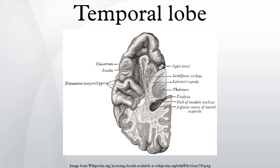Visual: The areas associated with vision in the temporal lobe interpret the meaning of visual stimuli and establish object recognition. The ventral part of the temporal cortices appear to be involved in high-level visual processing of complex stimuli such as faces and scenes. Anterior parts of this ventral stream for visual processing are involved in object perception and recognition.